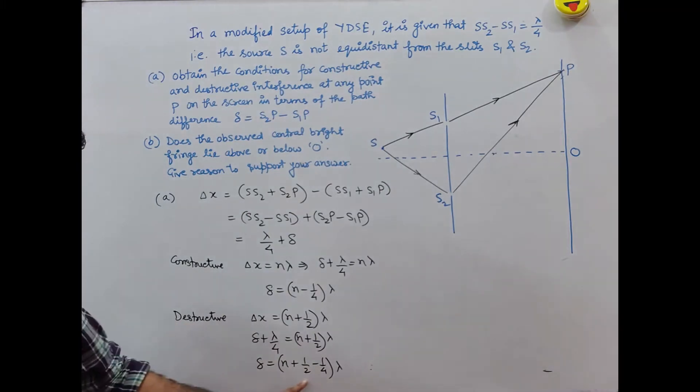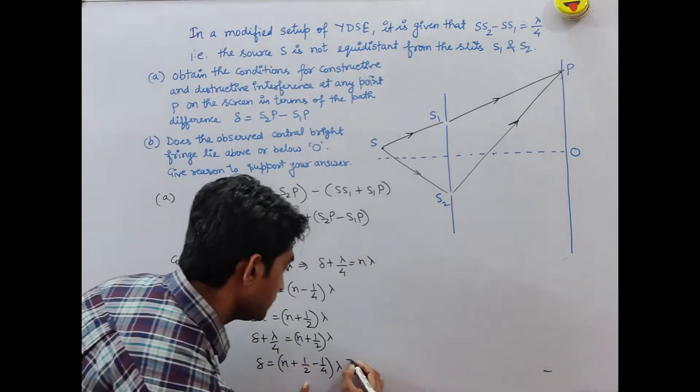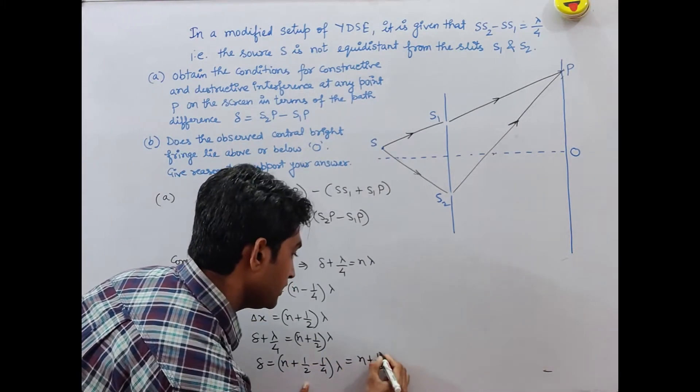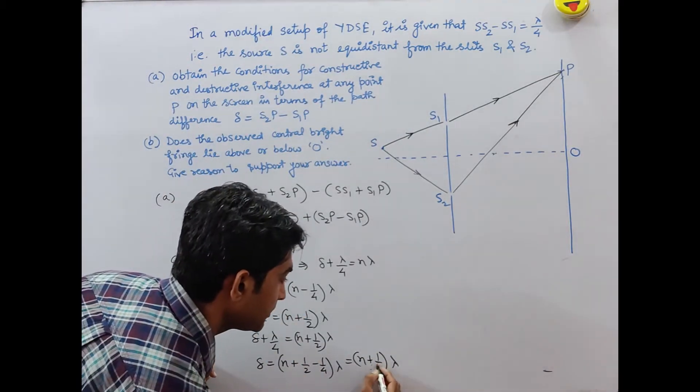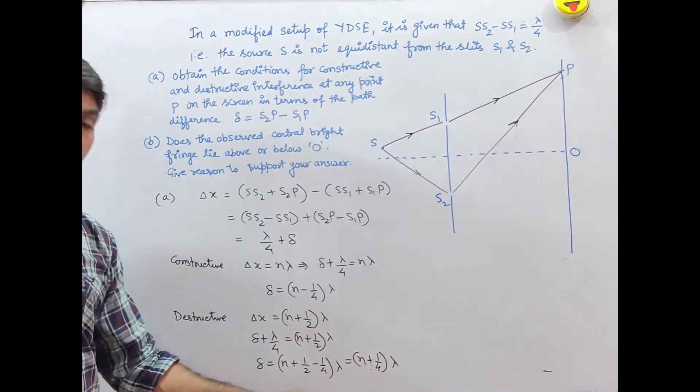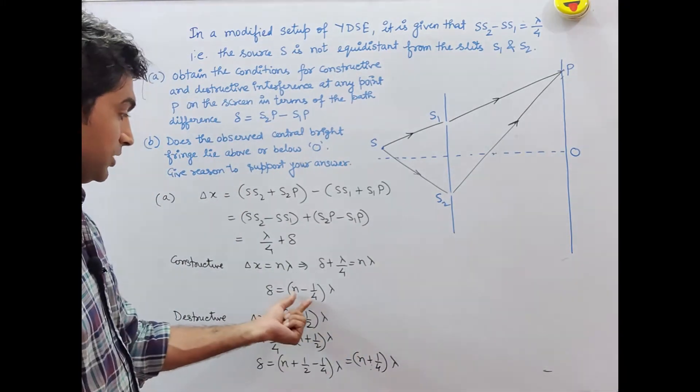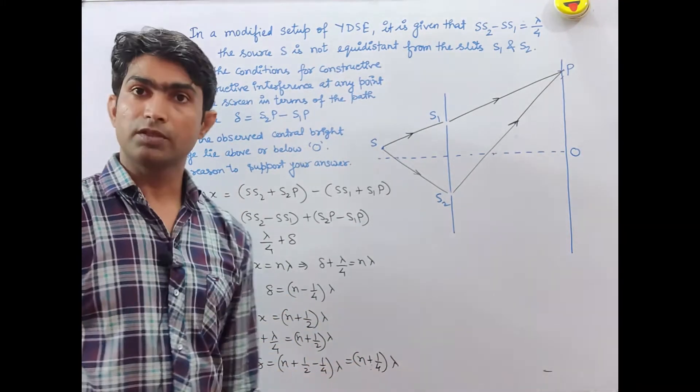So delta X values are n by 4, n plus 1 by 2, n minus 1 by 4, and n plus 1 by 4 lambda.